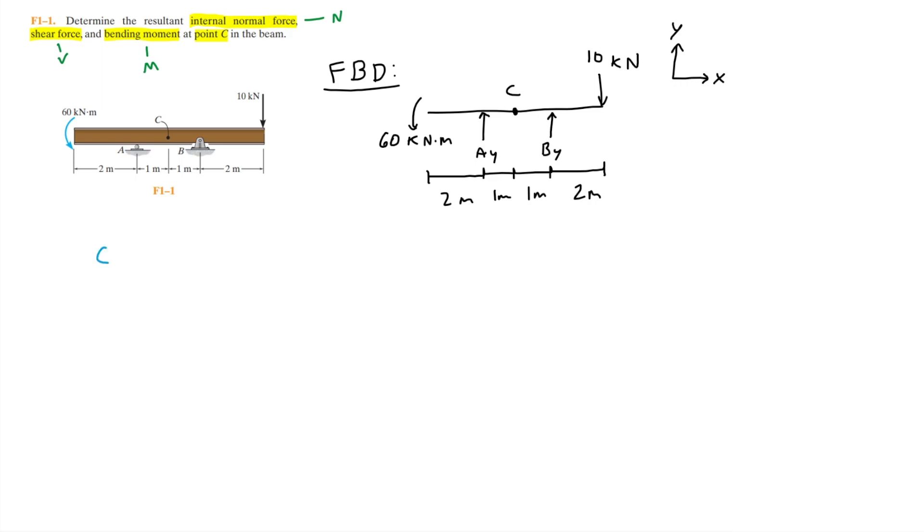So now we can move on to the global equilibrium of the entire system, which is essentially our statics analysis, in order to find the values of AY and BY. Taking a look at the free body diagram that we've drawn, how can we find the values of AY and BY?